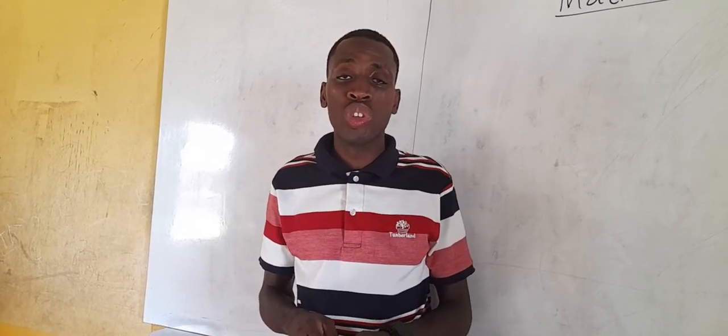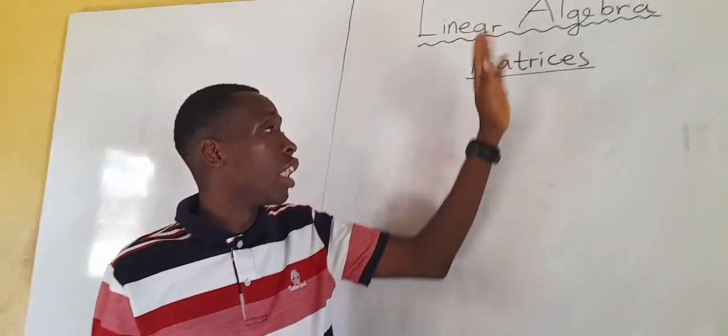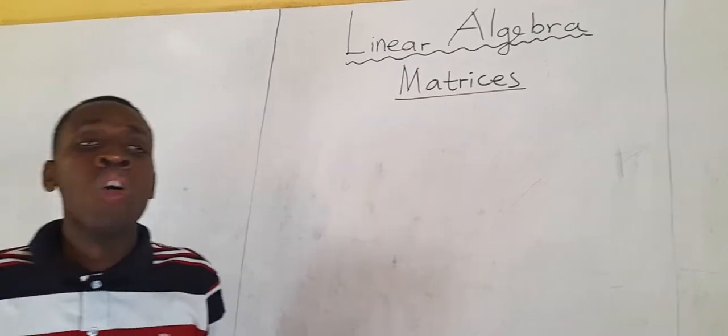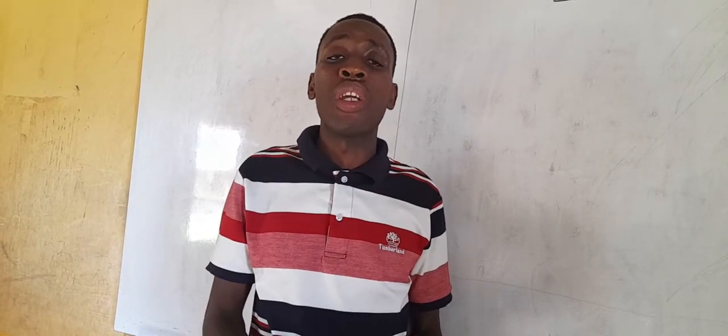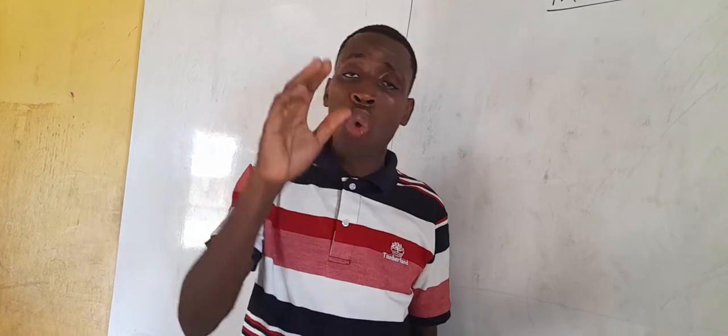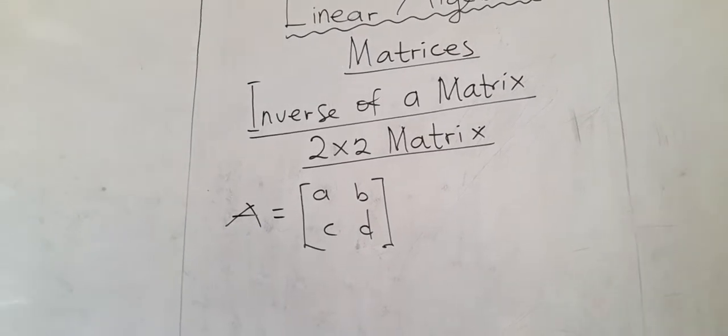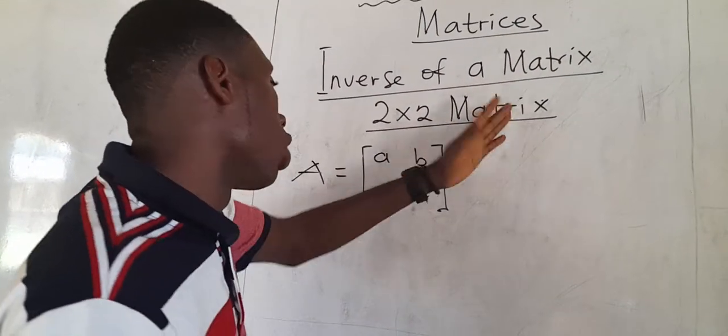Today our discussion on linear algebra and matrices will cover another aspect of matrix. So far we have learned a lot — we learned how to add matrices, the forms of matrix, and how to find the determinant of a 2×2 and 3×3 matrix. Today, before the video ends, we will learn how to find the inverse of a 2×2 and 3×3 matrix. This will be a very interesting discussion, so watch the video till the end.